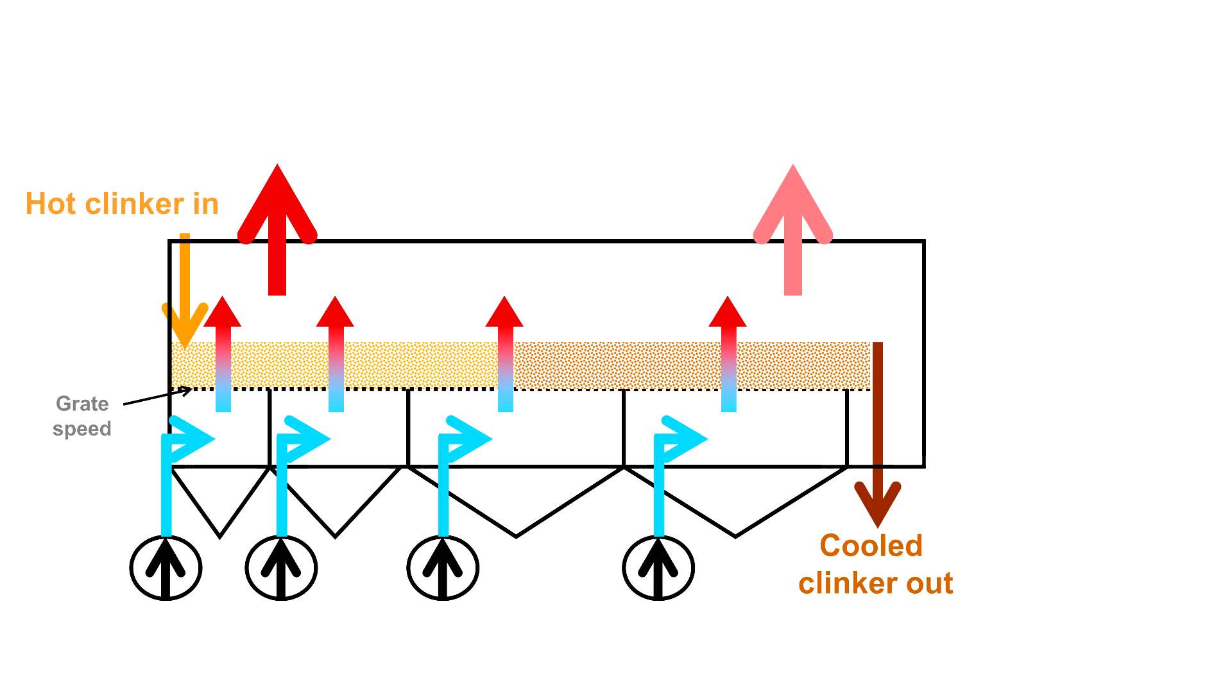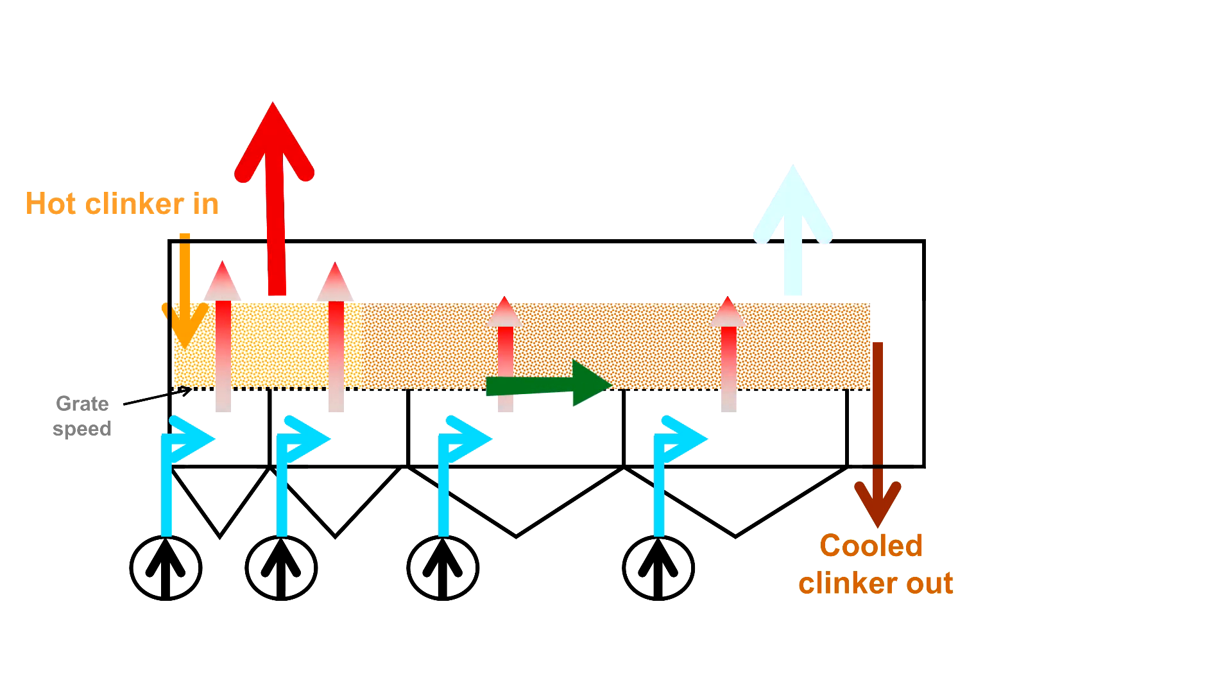Knowing this and looking at the previous scheme, this means that in theory, the best way to run the cooler would be to have a very slow grate speed, which would keep the hot clinker in the recuperation zone and achieve the best heat exchange possible. This is the theory. But let us understand how much energy can be recovered from hot clinker. Let us talk about the cooler heat balance.